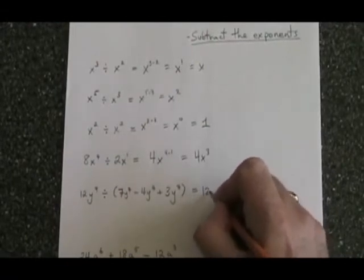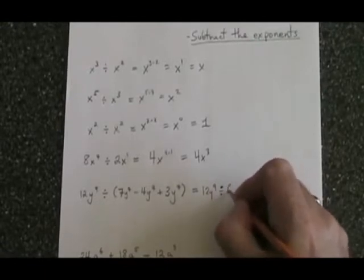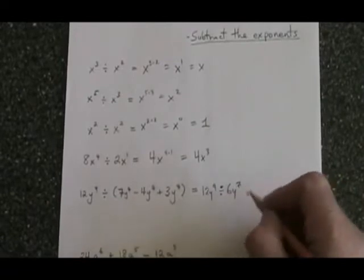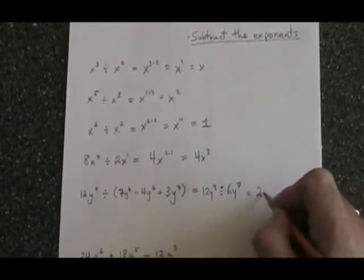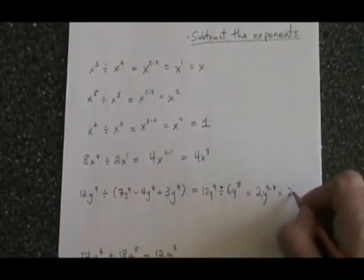We have 12y to the 9 divided by 6y to the 7. This is equivalent to 12 divided by 6 is 2. y to the 9 divided by y to the 7 is y to the 9 minus 7. So our answer is 2y squared.